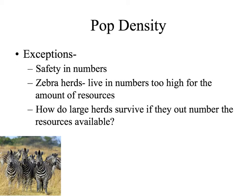There are some exceptions to the population density rule. We often see herds of animals traveling together because there is safety in numbers. Zebra herds, for example, live in high numbers where the density is too high to be supported by the resources in one area. They live together because they are safer together — it's harder for a lion or other predator to pick them off in a big group. This is why herds of zebras and other large herbivores migrate across the savanna, moving from place to place to increase their resource availability.